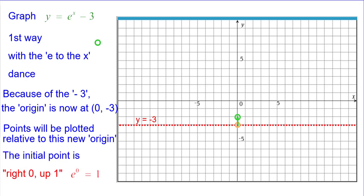The initial point, right 0 up 1, because e to the 0 power is 1. Right 1 up 2.7, e to the first power is approximately 2.7. And right 2 up 7.4, e squared is about 7.4.